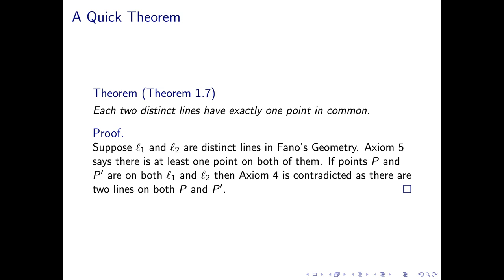A fair question at this point might be: why don't we just make that axiom 5 — why did we state the weaker version? There is an aesthetic to making the weakest assumptions possible. So even though we could have made this axiom 5, it actually follows from a slightly weaker assumption. In mathematics, the weaker the assumptions you can use to arrive at the same result, the better.